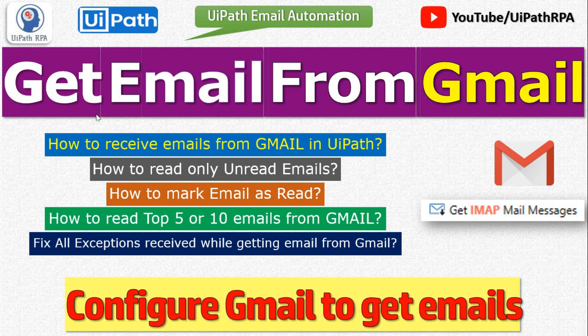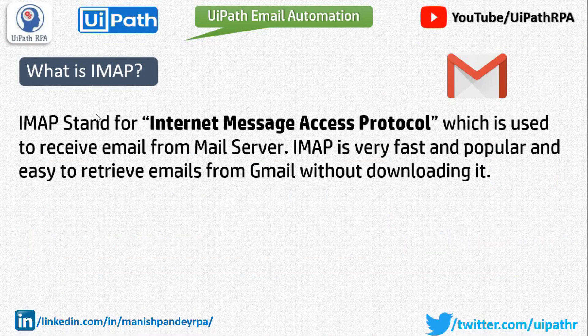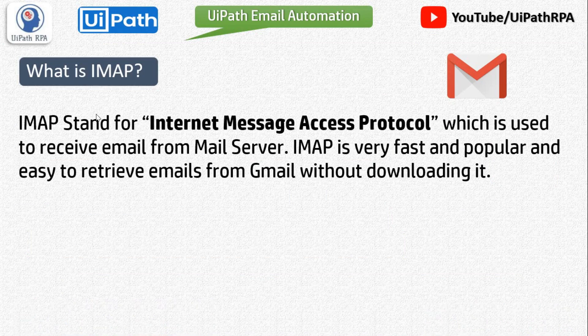We are going to use the Get IMAP Mail Message activity to get email from Gmail. IMAP stands for Internet Message Access Protocol, which is used to receive email from a mail server. IMAP is very fast, popular, and easy to retrieve emails from Gmail without downloading them.